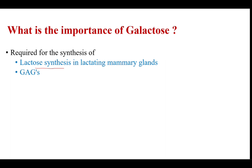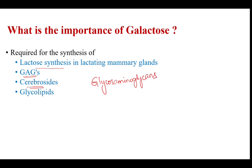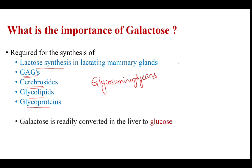The importance of galactose: it is required for the synthesis of lactose in lactating mammary glands, for the synthesis of glycosaminoglycans (GAGs), cerebrosides, glycolipids, and glycoproteins. All these compounds depend on the supply of galactose. Galactose is readily converted in the liver to glucose.